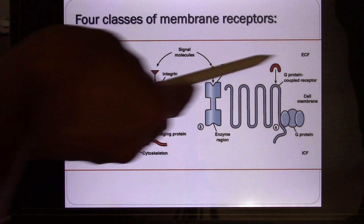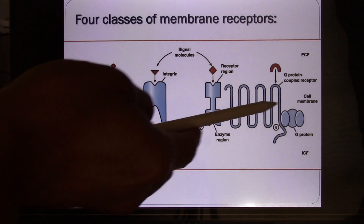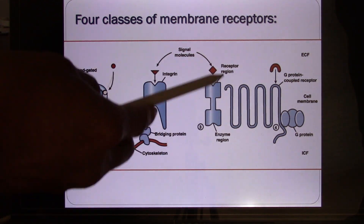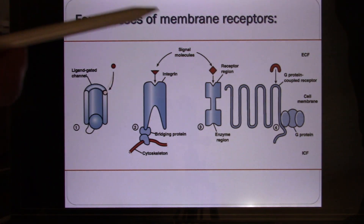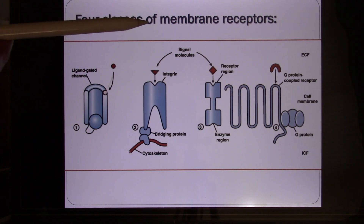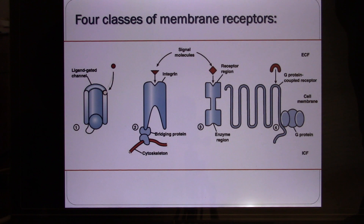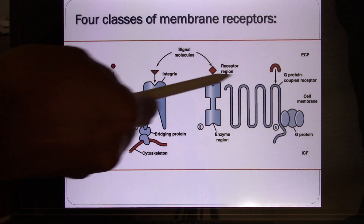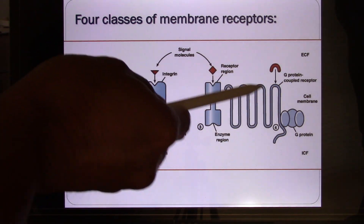The last one — another important one — is called the G-protein coupled receptor. When the ligand comes, it binds with the receptor. These receptors have several transmembrane areas. At UT, we have professors who spend their whole life studying one kind of G-protein coupled receptor. They have several transmembrane domains.